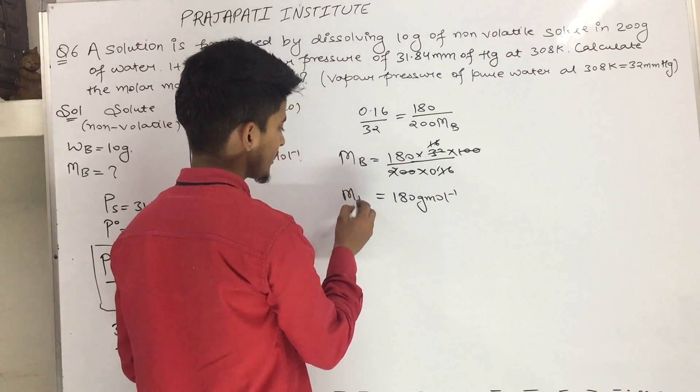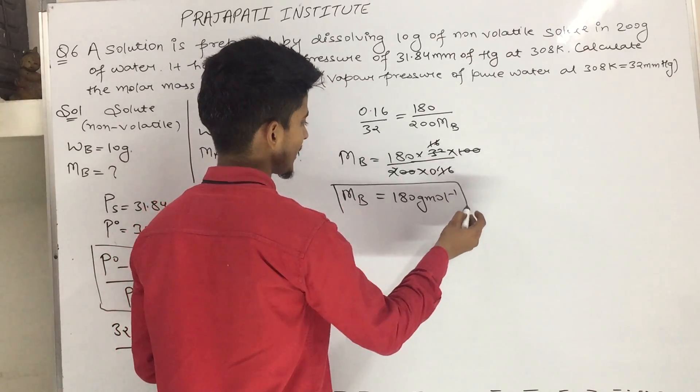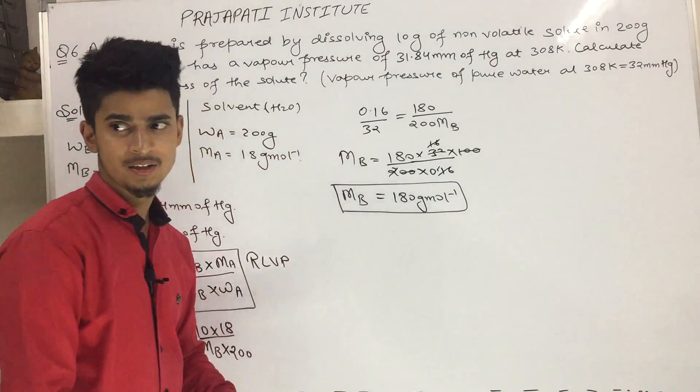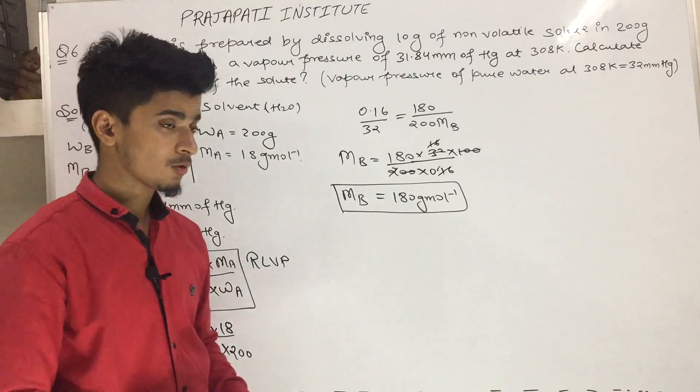The molar mass mb of the non-volatile solute, the final answer is 180 g/mol. Now the question is complete.